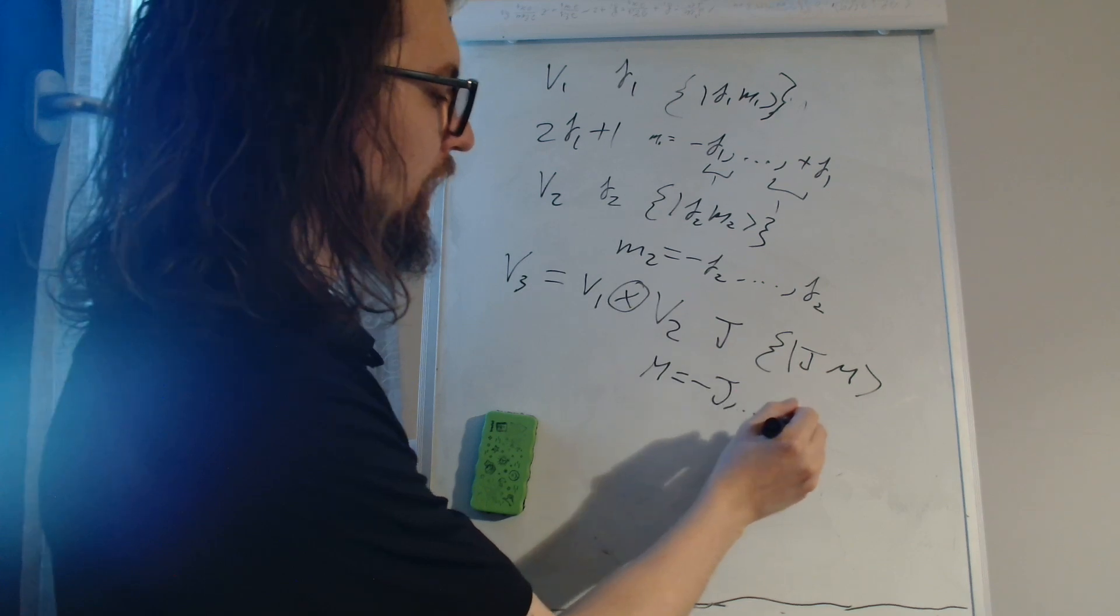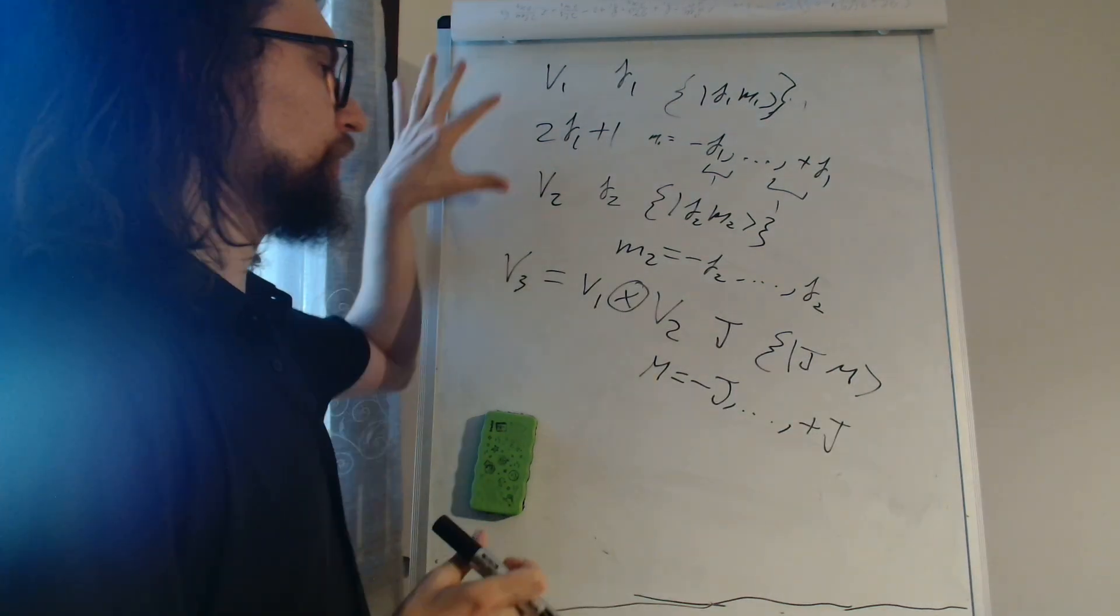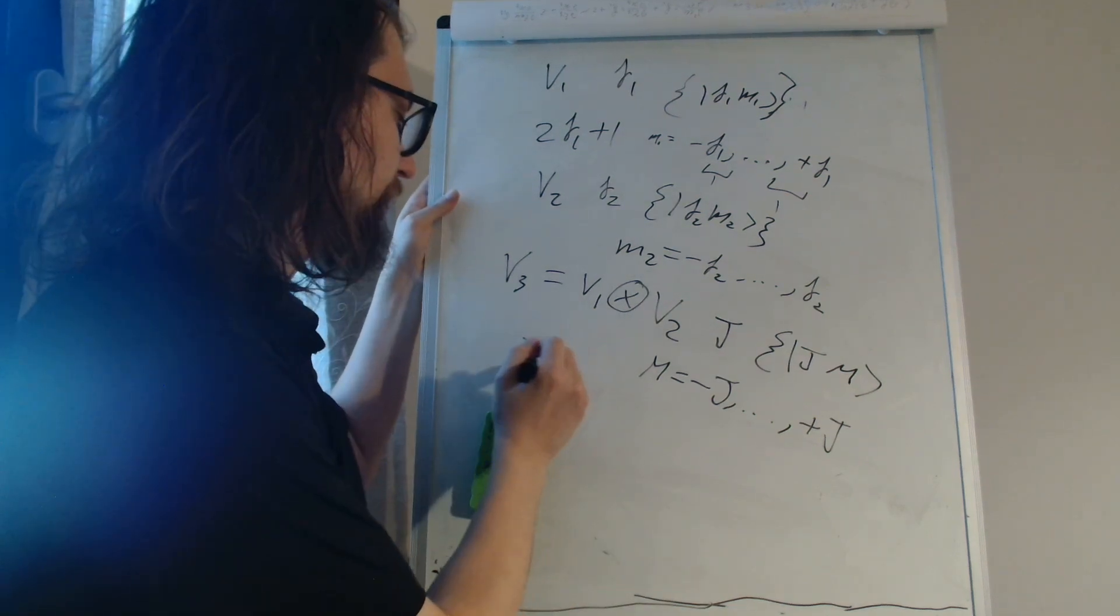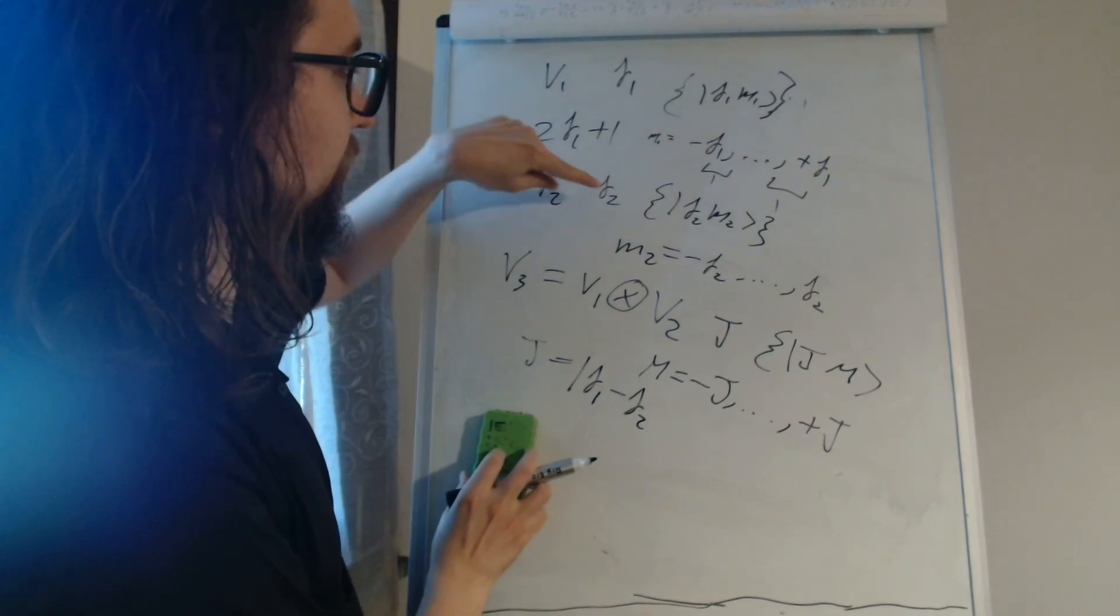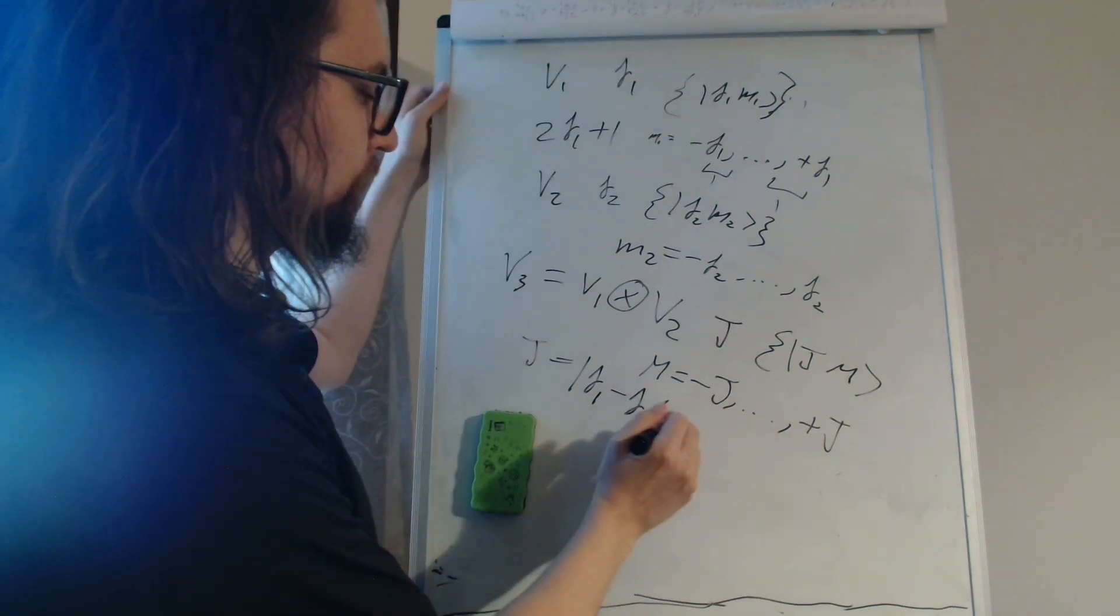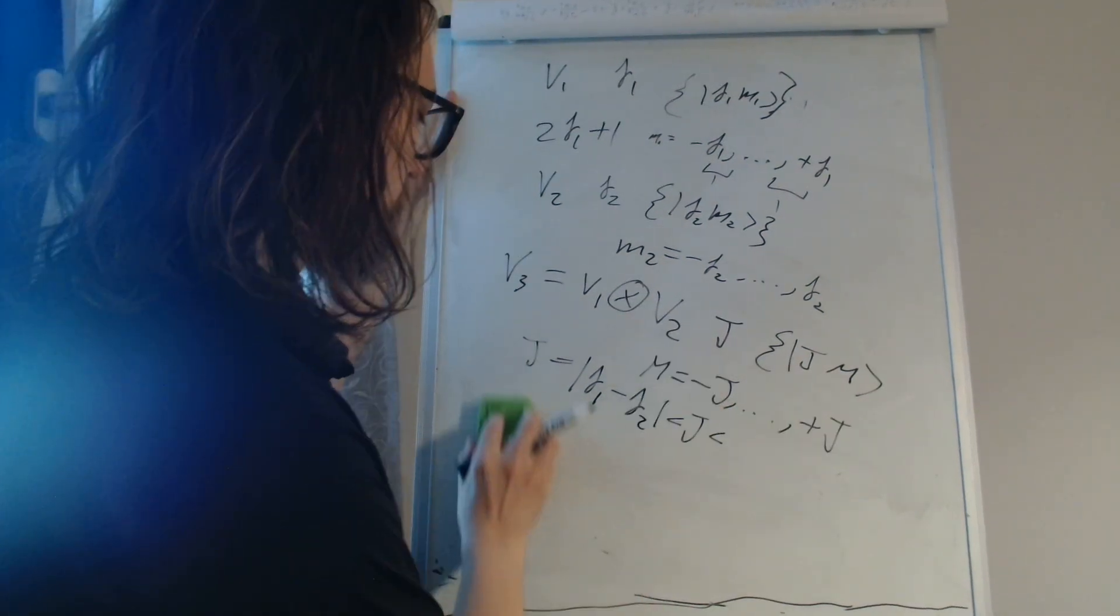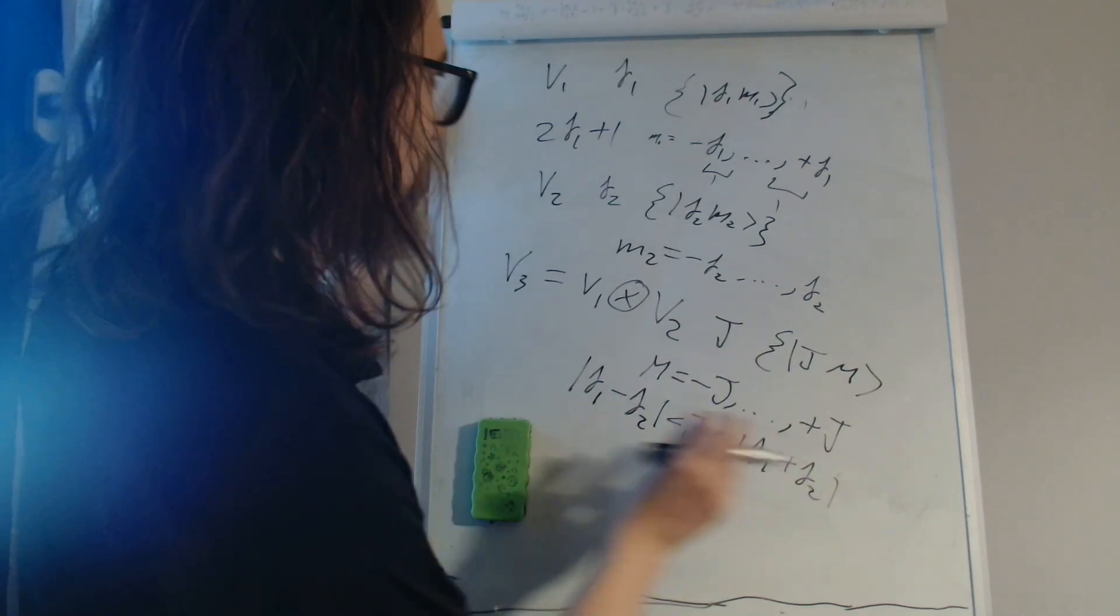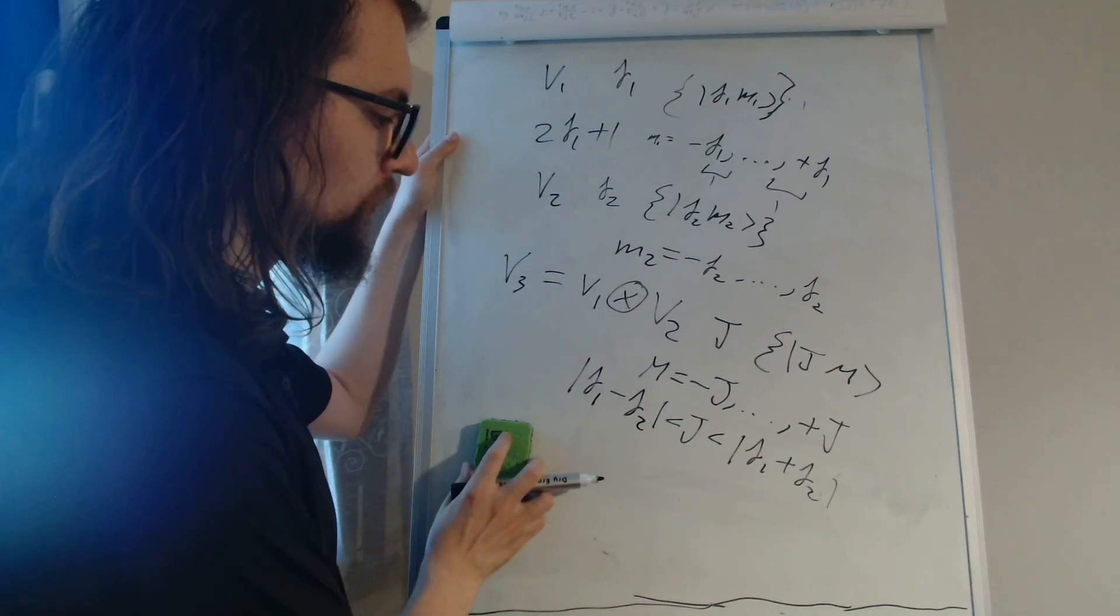When coupling these two systems, J in principle can have any value from the absolute value of the difference of these two angular momenta, J1 minus J2, up to the absolute value of J1 plus J2.